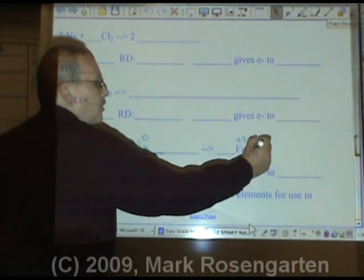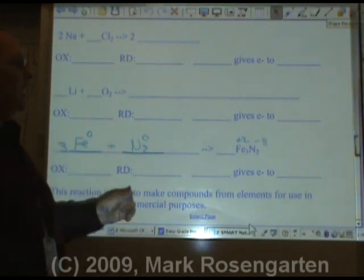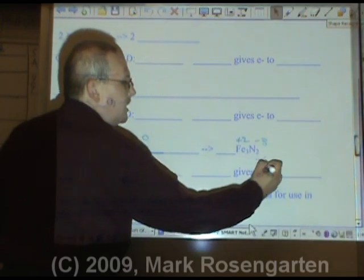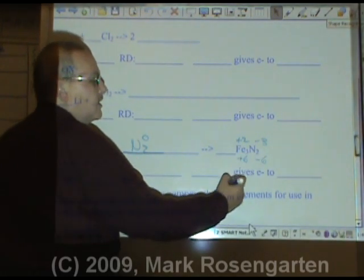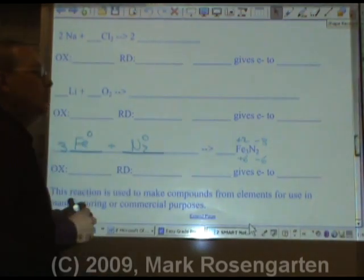Iron has no charge, and neither does nitrogen. If they did, they'd be in a compound. Plus two, minus three. You can look this up on the periodic table. Nitrogen is minus three. Two of them are minus six. Therefore, iron has to be plus six. Divided by the three irons, means each iron is plus two in charge.